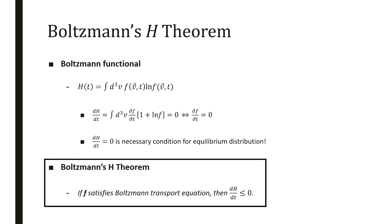We're going to hold that result and define the Boltzmann functional H as the integral over phase space of f log f. If we derivate this functional on time and set it equals to zero, it's equivalent to saying the partial derivative of f with t equals zero. So dH/dt equals zero is a necessary condition for equilibrium distribution.